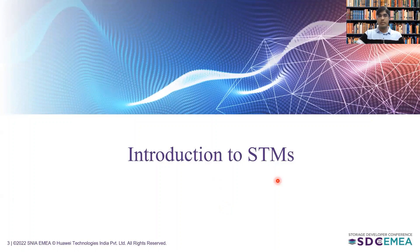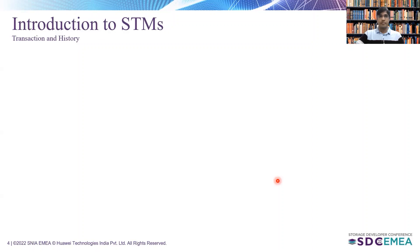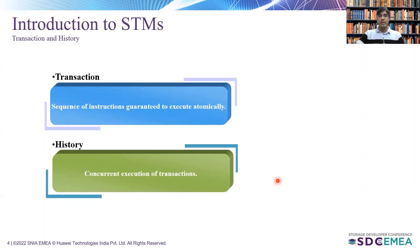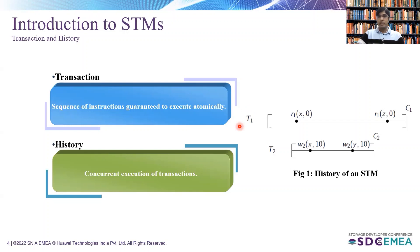Let's talk about introductions to STM. First, we will see what a transaction and history are. A transaction is a sequence of instructions guaranteed to execute atomically. A history is the concurrent execution of transactions. Here, we have considered two concurrent transactions T1 and T2, where R stands for read and W stands for write, and they are working on some shared data items such as X, Y, and Z. C1 and C2 are the commits of transactions T1 and T2 respectively. This concurrent execution of transactions is called a history of an STM.